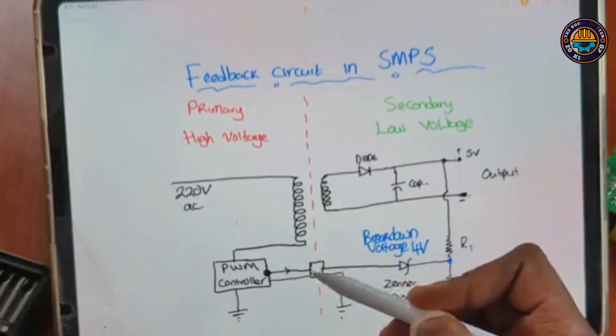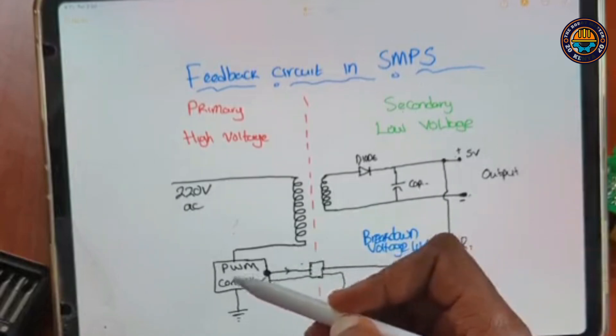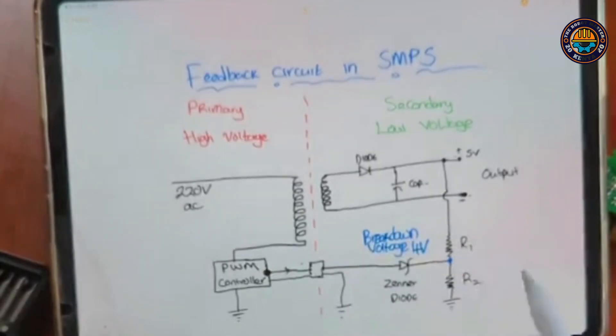Then the phototransistor closes the switch between the emitter and collector. And that is what is monitored by the PWM controller to be able to increase or reduce the duty cycles when switching. See you, Kosa.